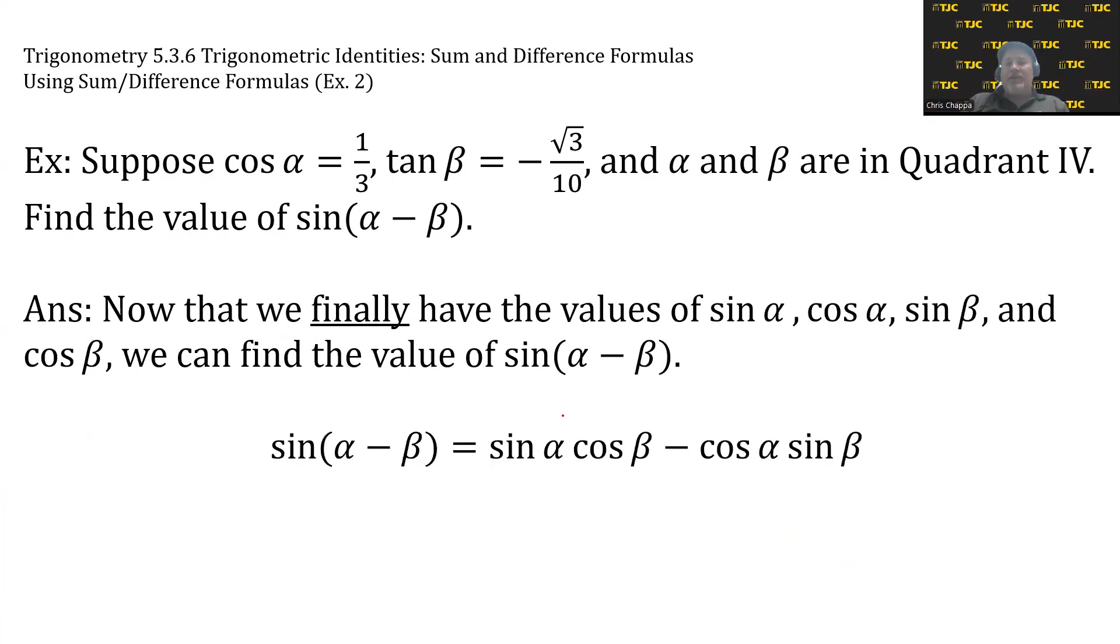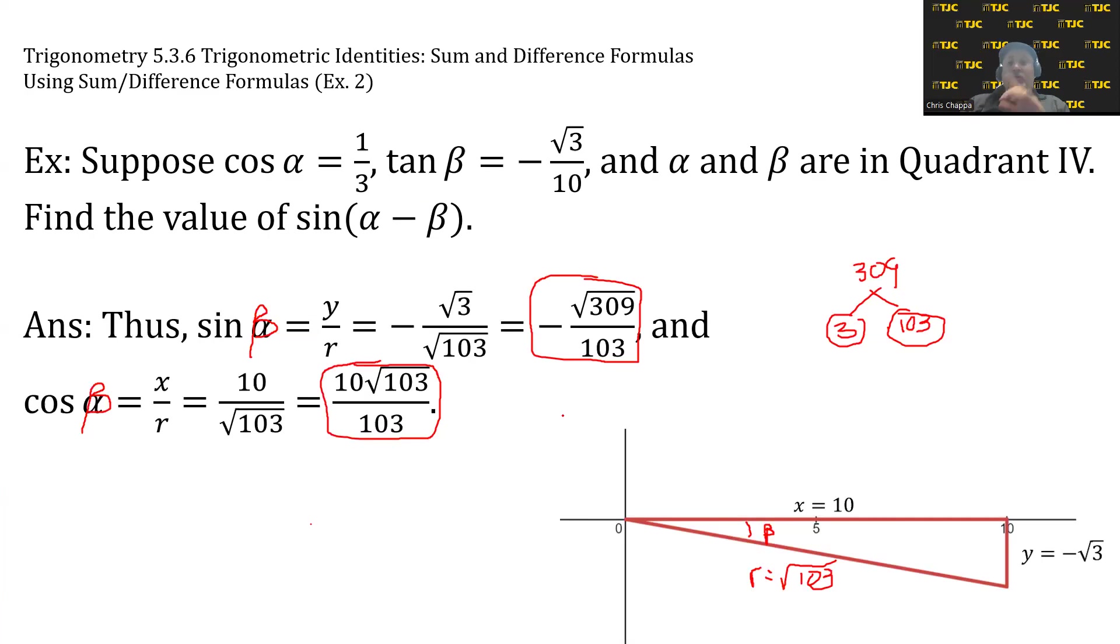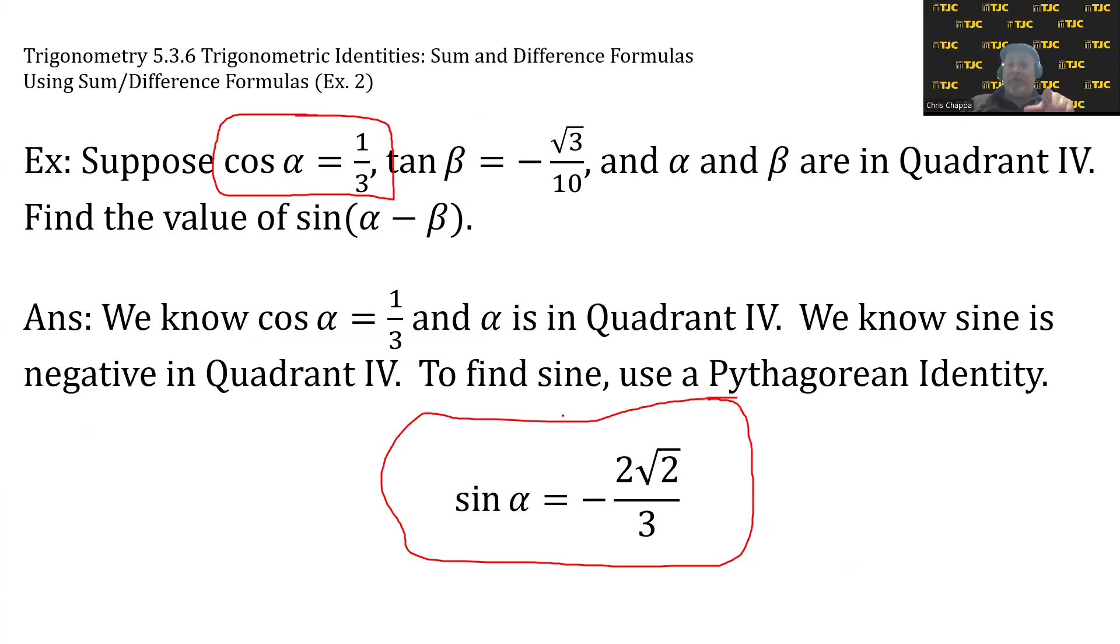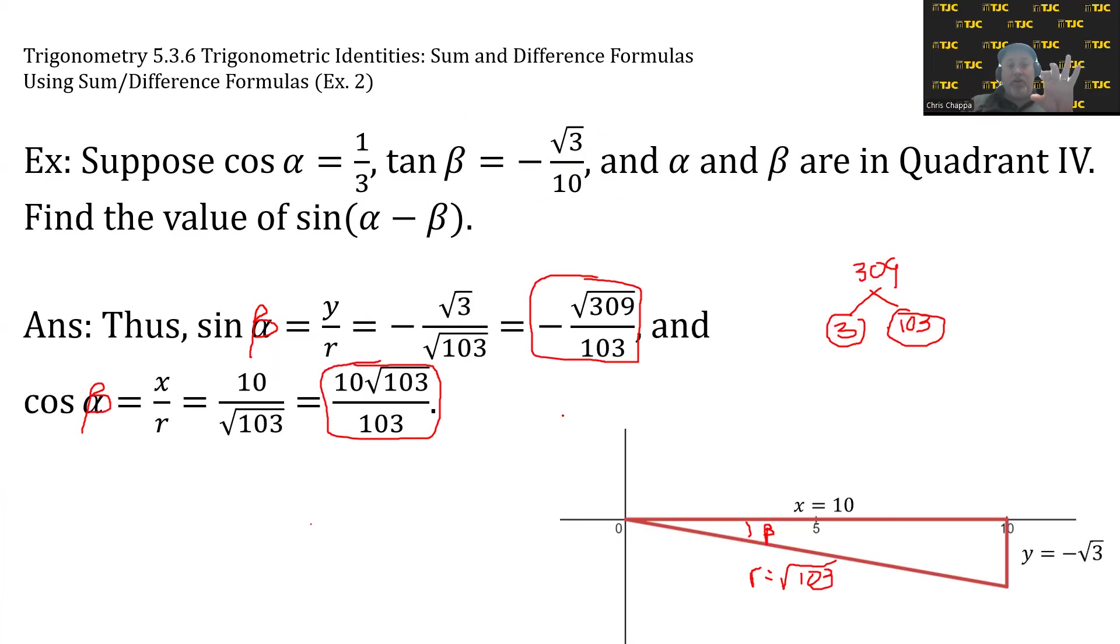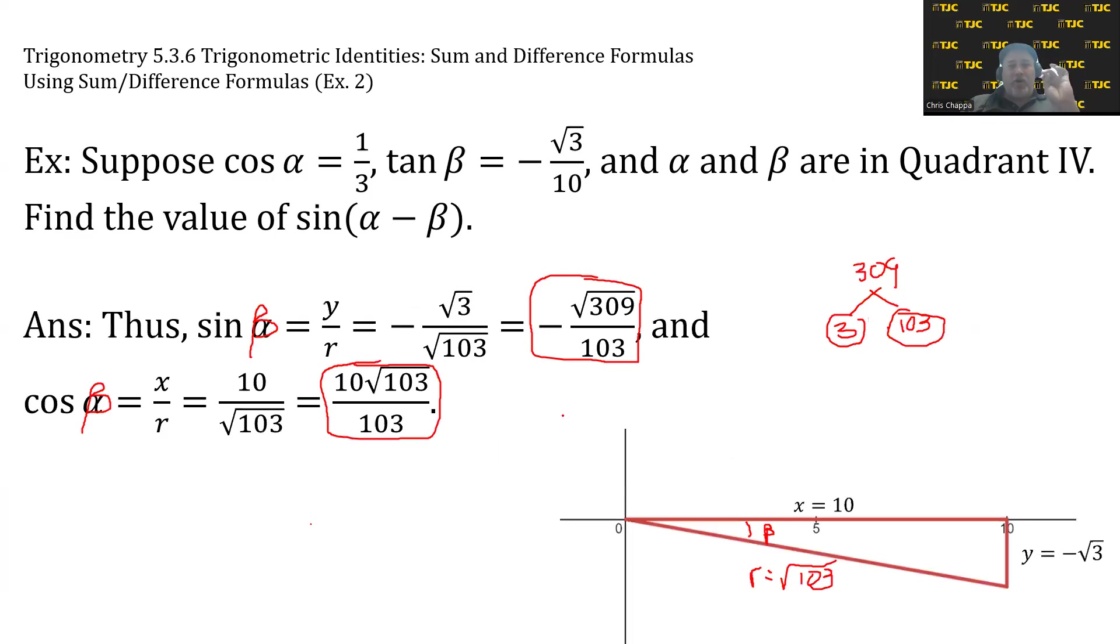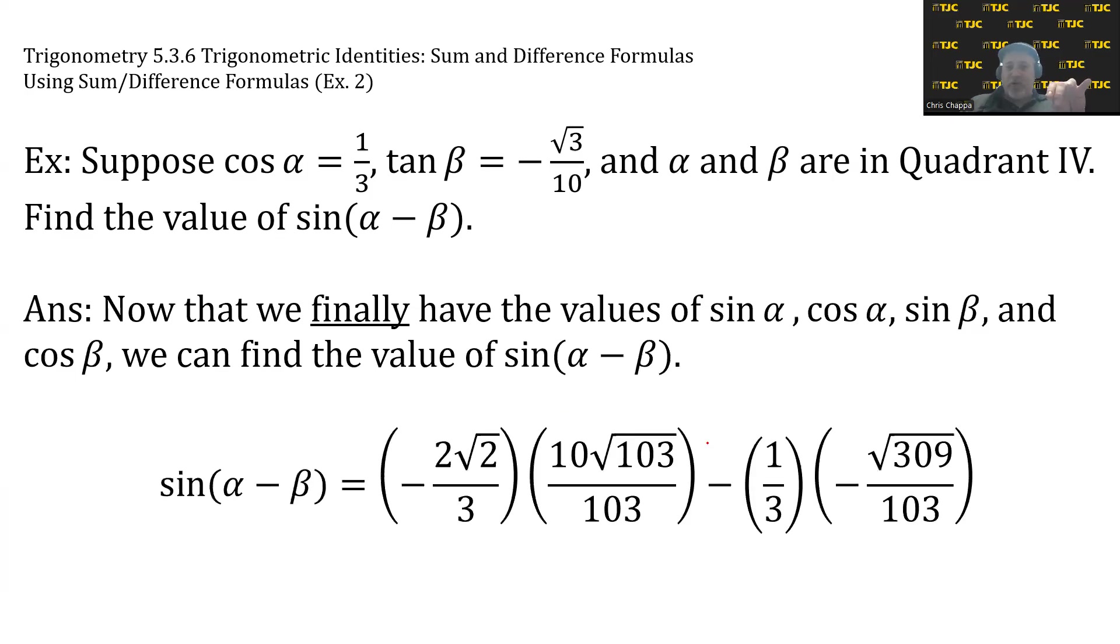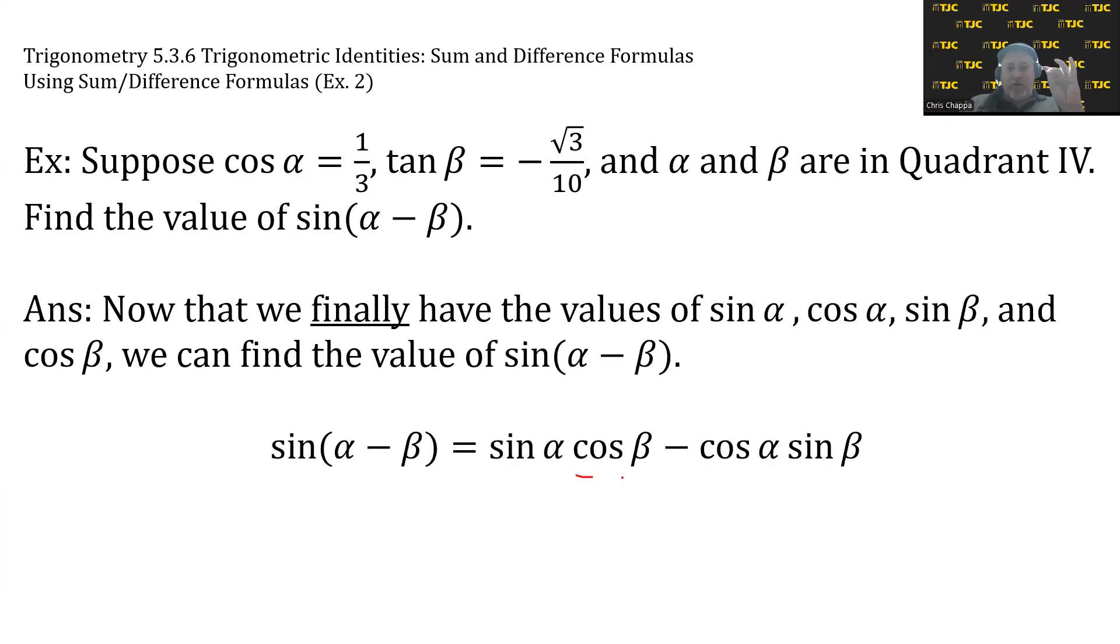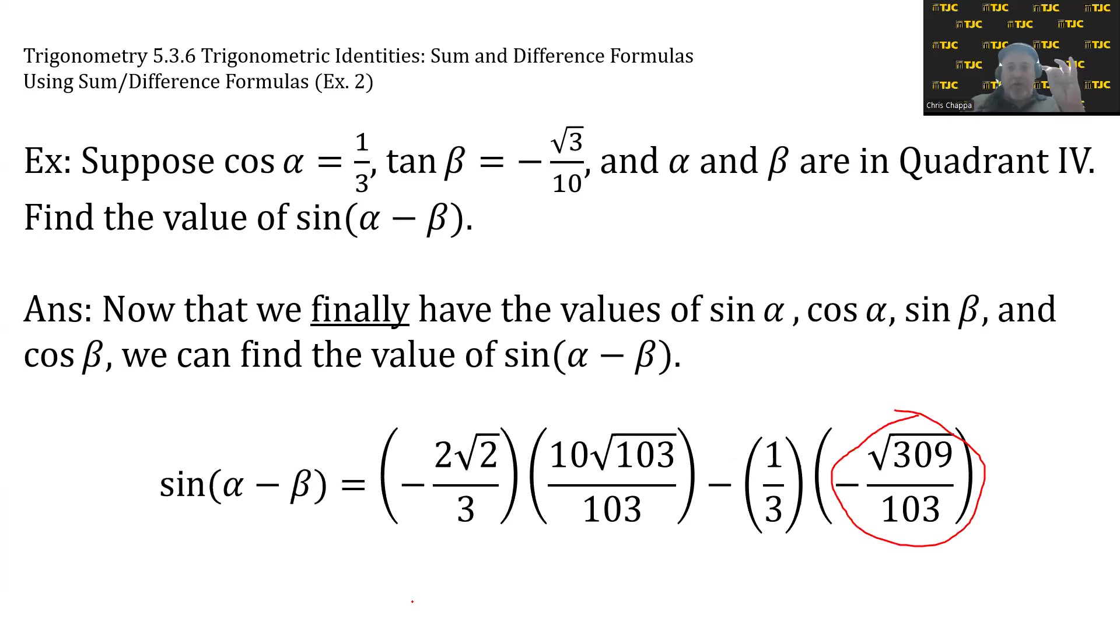We're finding sin(α - β), which means we need these four trig values. Here's the ones for β, here's the one for sin α, and we were given cos α. These values go into this formula. Let's double check - the betas were -√309/103 for sine, that's correct. Cos β was 10√103/103, that's correct. Cos α is 1/3, that was given. And sin α is -2√2/3, that's correct.